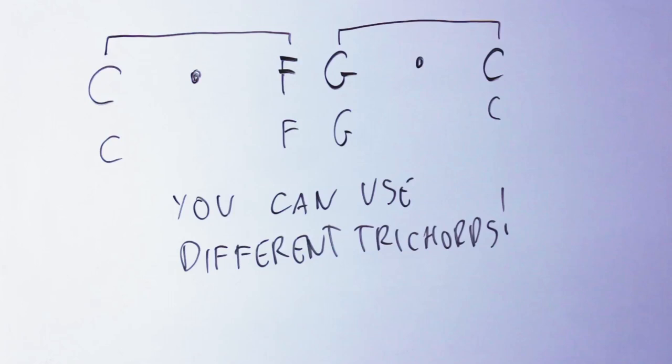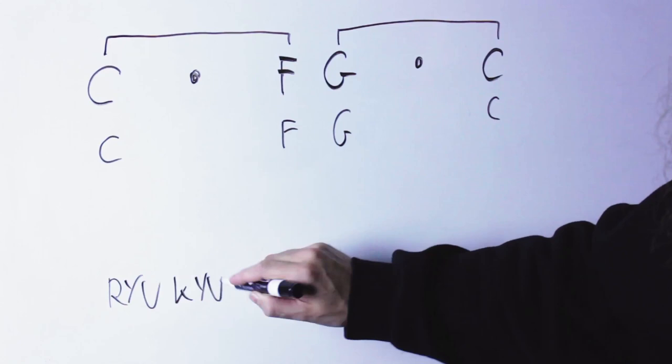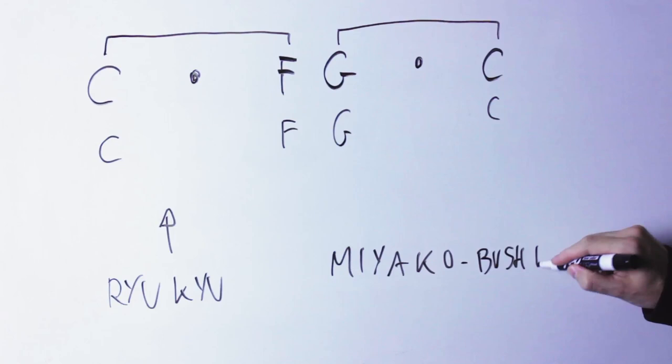So, for instance, here's what's happening if I'm taking the inferior trichord from the Ryukyu scale and the superior trichord from the Miyako Bushi scale. I will have C, E, F, G, A flat, C.